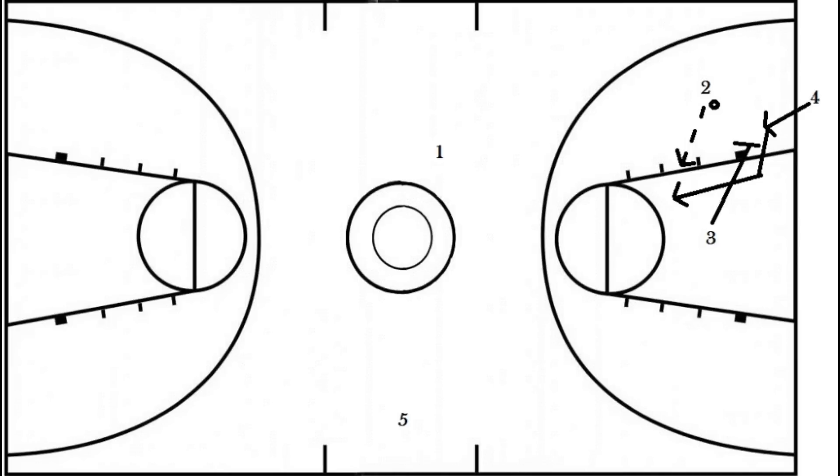If player 2 gets the pass, player 3 will set a pick for the inbounds player. Then the inbounds player will use the pick and sprint up the court looking for the basketball.